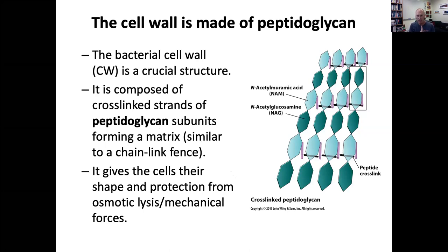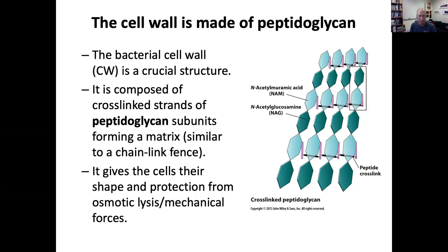Our human cells don't have cell walls, but many organisms we're familiar with, like plants, do have cell walls made of cellulose and lignin. Bacteria, which are unicellular organisms, rely on these cell walls to protect them from changes in the environment that might cause differences in osmotic pressure that might lead to rupturing the cell.